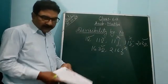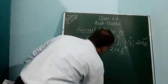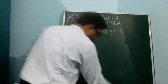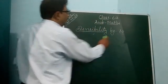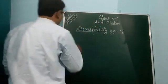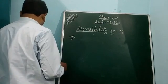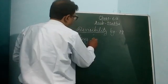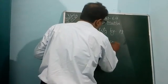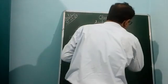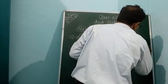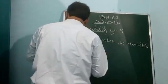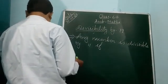It is compulsory that the ones place or last digit must be 0 for divisibility by 10. Next, divisibility by 11. Any number is divisible by 11 if the difference between the sum of the digits at odd places and even places is either 0 or 11.